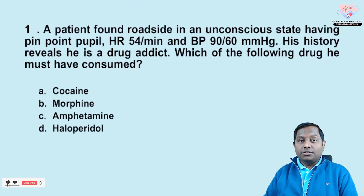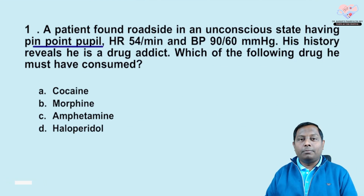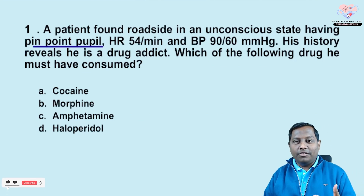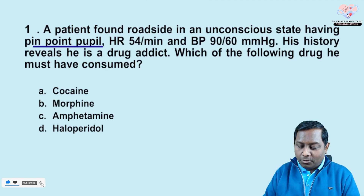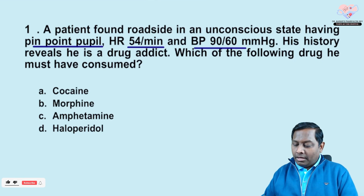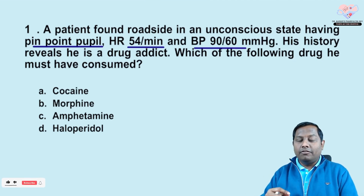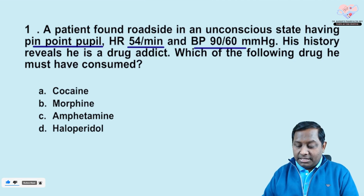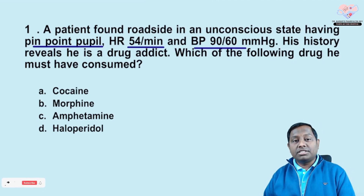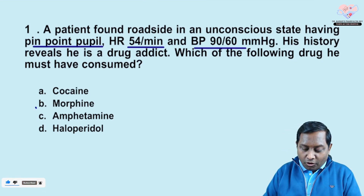The first question is about a patient found on the roadside in an unconscious state having pinpoint pupils. Whenever you see pinpoint pupils, always think of pontine hemorrhage, organophosphate, morphine, or phenol poisoning — POMP is the mnemonic. Heart rate is low, blood pressure is on the lower side. The question says the patient has a history of drug addiction. If it were a farmer, organophosphate would be more likely, but since he's a drug addict, we consider other options.